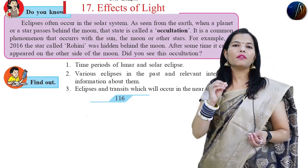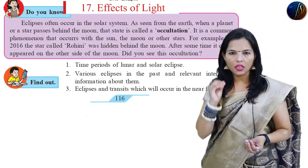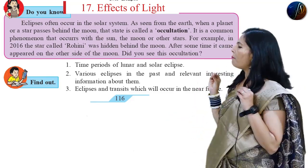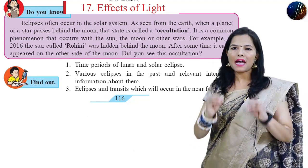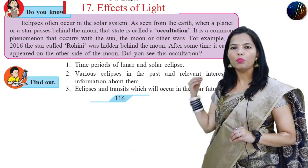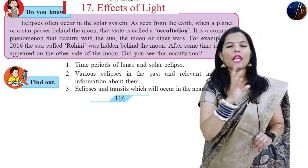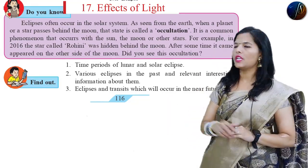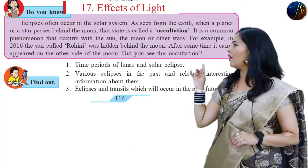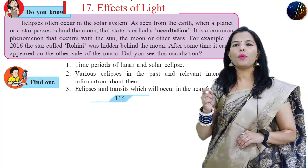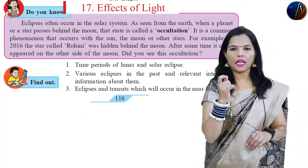As seen from the Earth, when a planet or star passes behind the Moon, that type of condition is called the occultation. There is a definition that is very important in the exam.